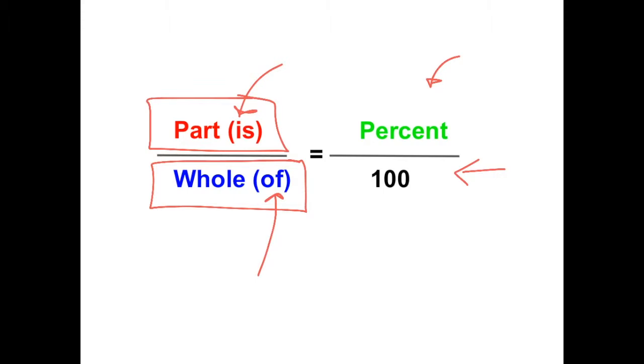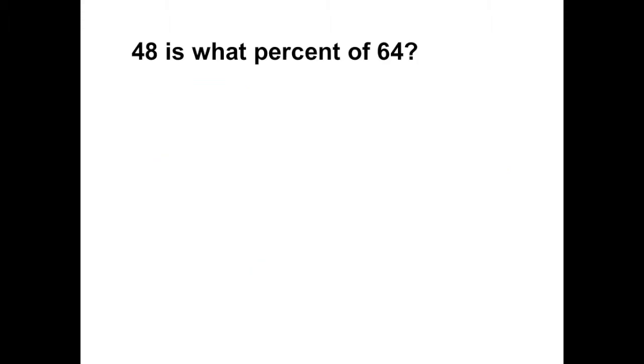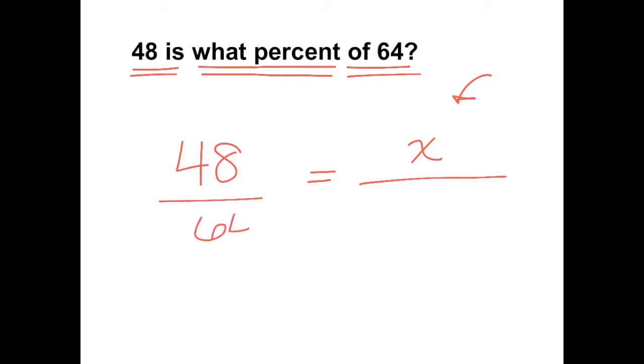48 is what percent of 64? What we're trying to find here is the percent. In a percent proportion, the percent goes here, so because this is what we're trying to find, we're going to use a variable. We have 48 is, so 48 is the part. Of 64—64 is my whole. And underneath the percent we always put 100.